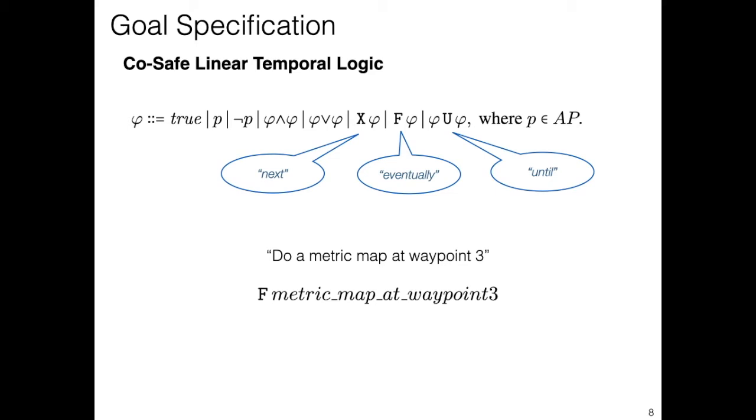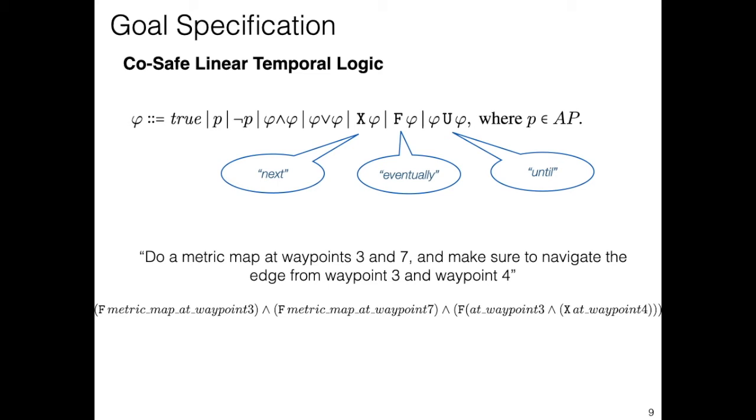Cosafe LTL allows for a wide range of task specifications. A simple example is asking the robot to execute a 3D sweep to build a metric map at a certain location. This can be encoded as eventually metric map at waypoint 3.